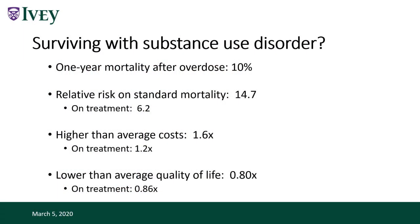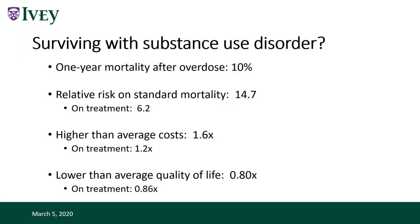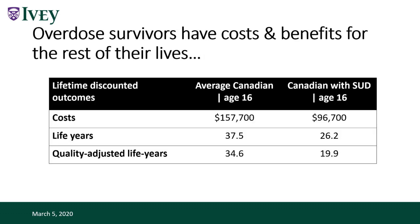We also modeled individuals with substance use disorder. One-year mortality after an overdose is about 10% because the risk of a second overdose is very high. We applied a relative risk on standard mortality rates, put 25% of people on opioid agonist therapy, and appropriately reduced their mortality, costs, and increased their quality of life. A Canadian with substance use disorder at age 16 has lower lifetime healthcare costs, lower life years, and lower quality-adjusted life years than without it. We considered both possible cases, with our base case being that the surviving individual does have a substance use disorder.